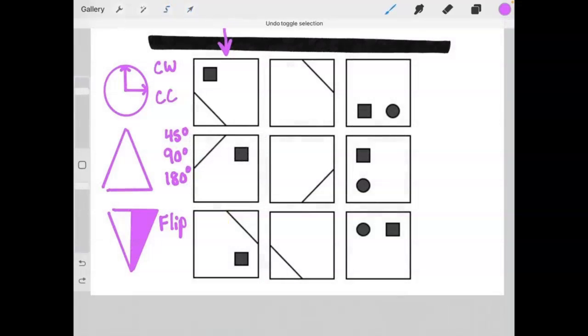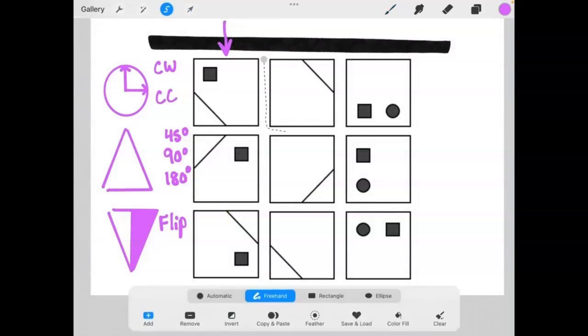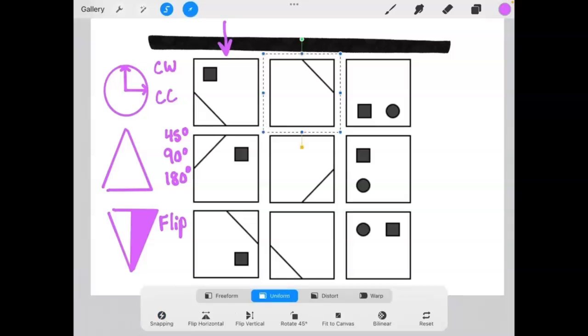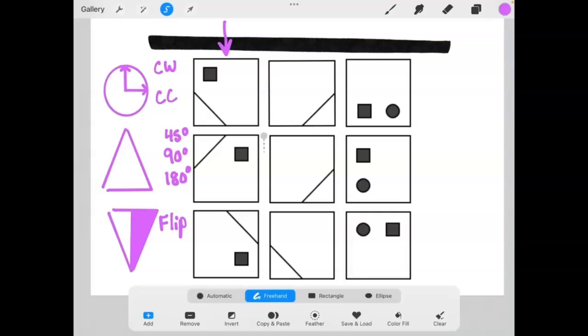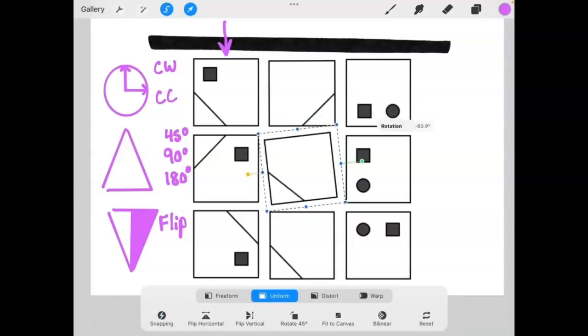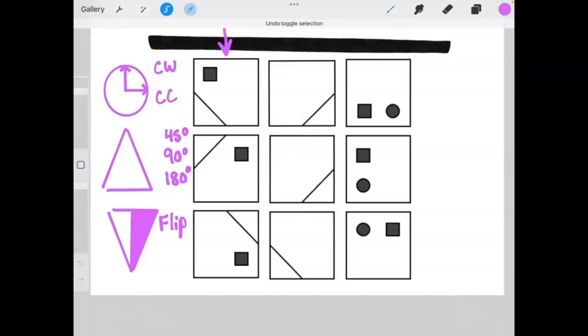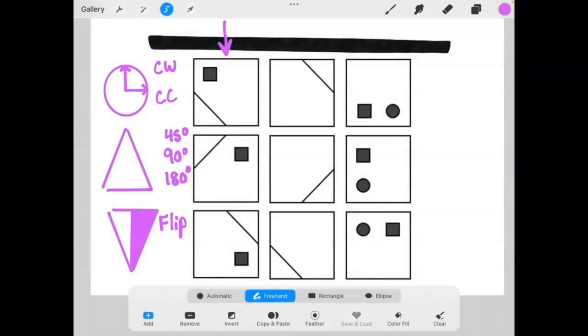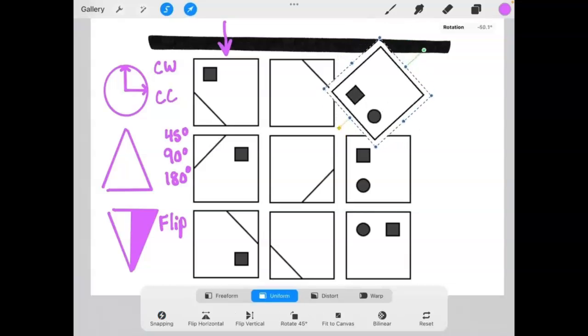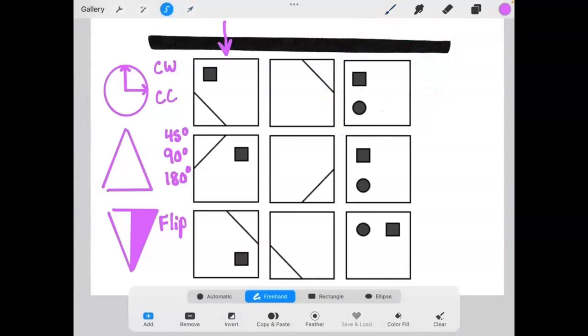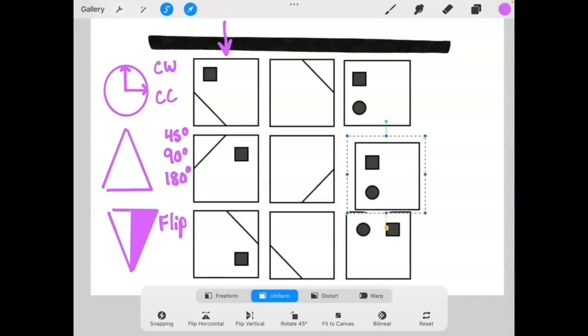If we do the same thing for the second column, the first element rotated 90 degrees matches the second element of the column. Second element of the column rotated 90 degrees again matches the third element of the column. And the same thing will be true in column three. The first element rotated 90 degrees matches the second element. The second element rotated 90 degrees will match the third element.